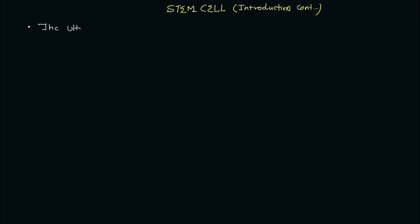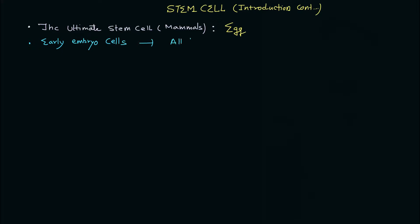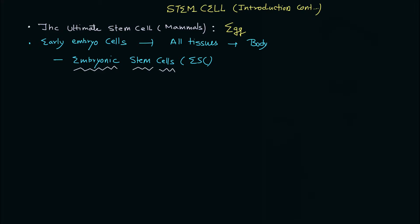Here we will continue our discussion and cover some important aspects. The first one is: what is the ultimate stem cell of mammals? The answer is the egg — why? Because it has the ability to form early embryonic cells. These cells have the ability to make all kinds of tissues as well as form the entire body. They are known as embryonic stem cells. We are not discussing the types of stem cells here, but we will cover that topic in a future video.